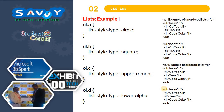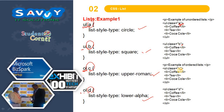Now let us look at the examples. UL means unordered list. Using class A gives circles, class B gives squares, class C gives upper roman numerals, and class D gives lower alpha. So here, all these outputs are printed accordingly.